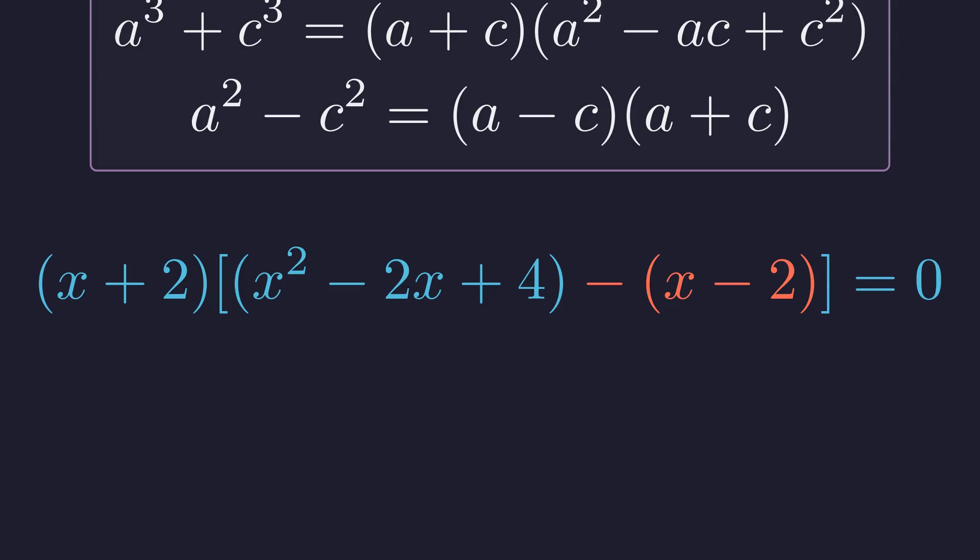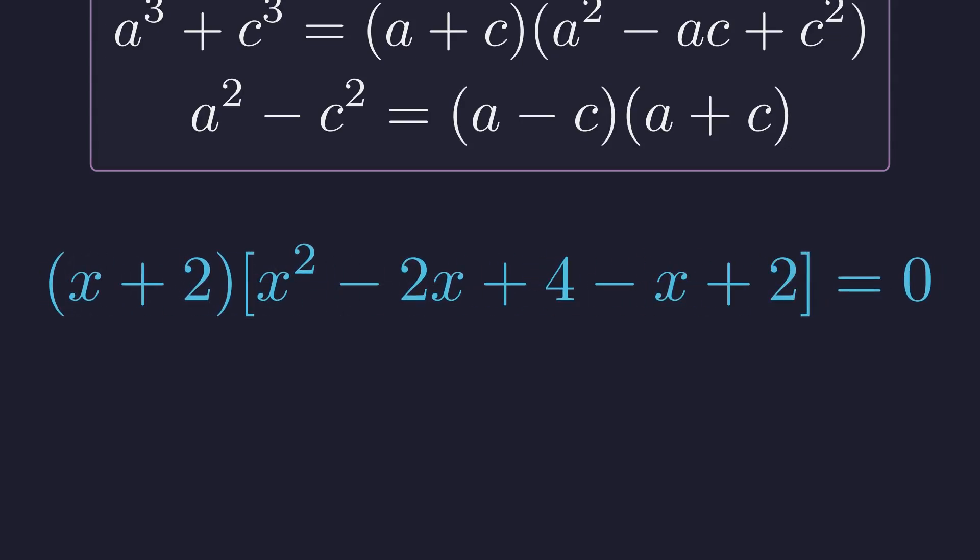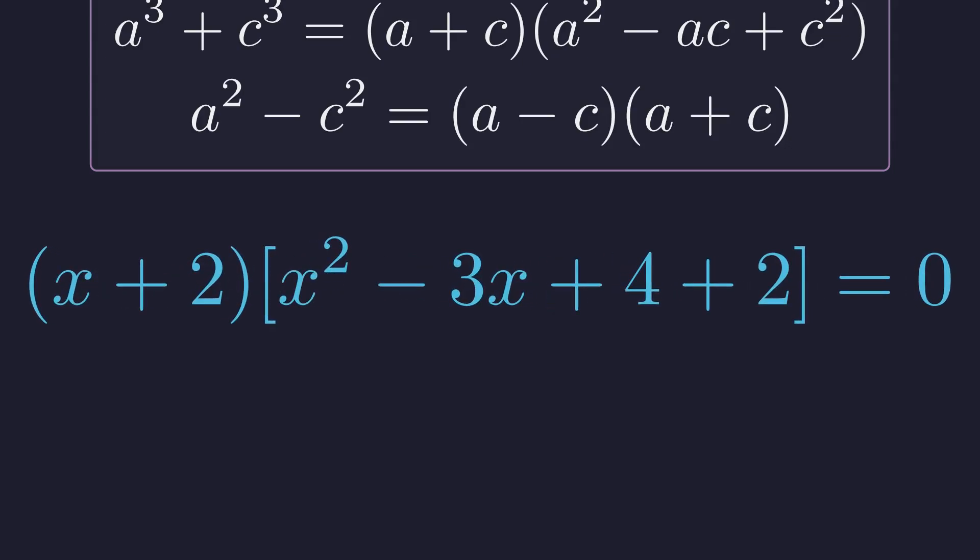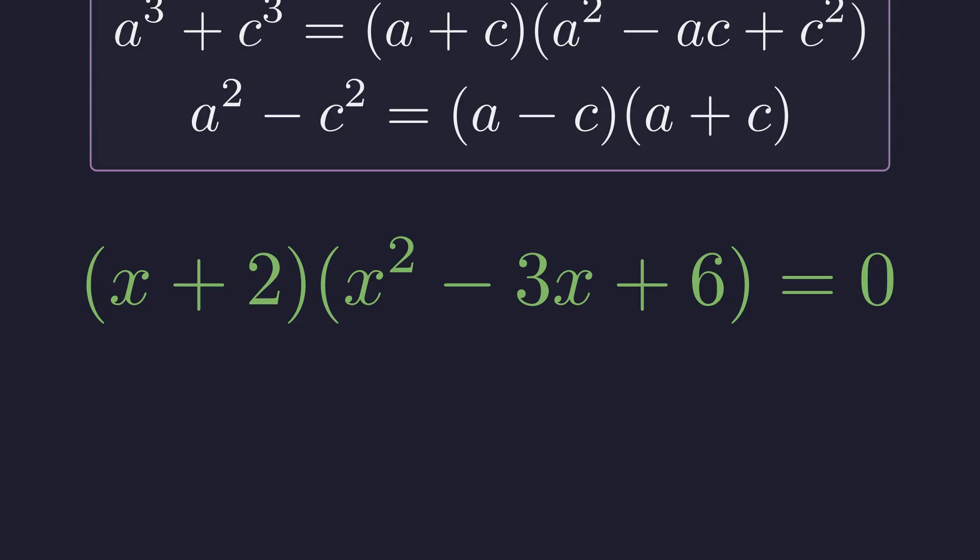Now we simplify what's inside the brackets by distributing this negative, giving us x squared minus 2x plus 4 minus x plus 2. Let's combine the like terms involving x. Negative 2x minus x gives us negative 3x. And combining the constants: 4 plus 2 is 6. And there's our final factored form derived entirely through clever algebraic manipulation.